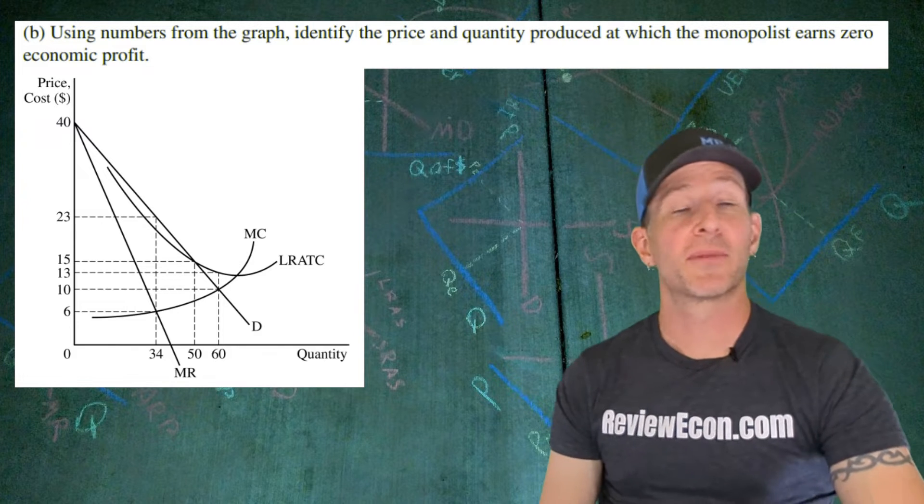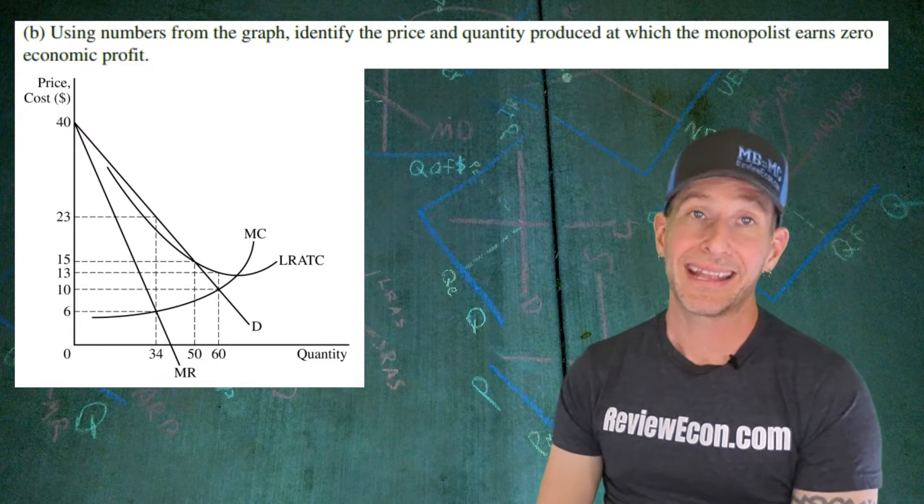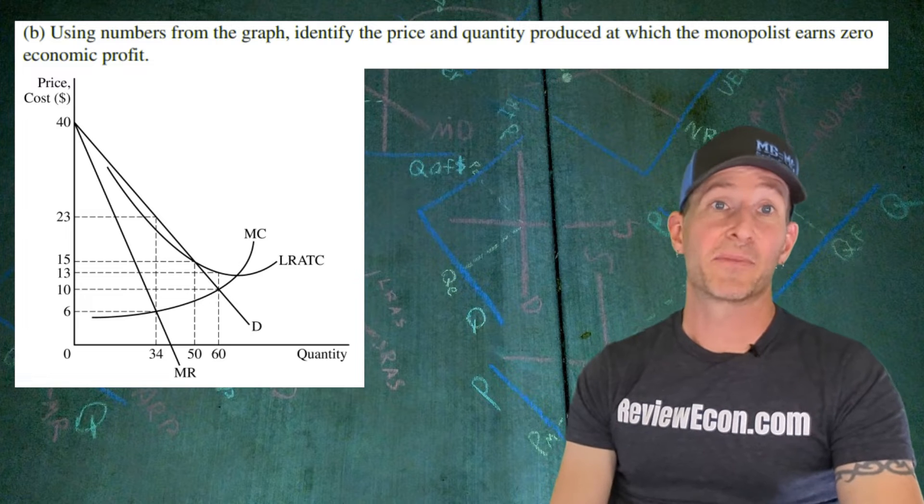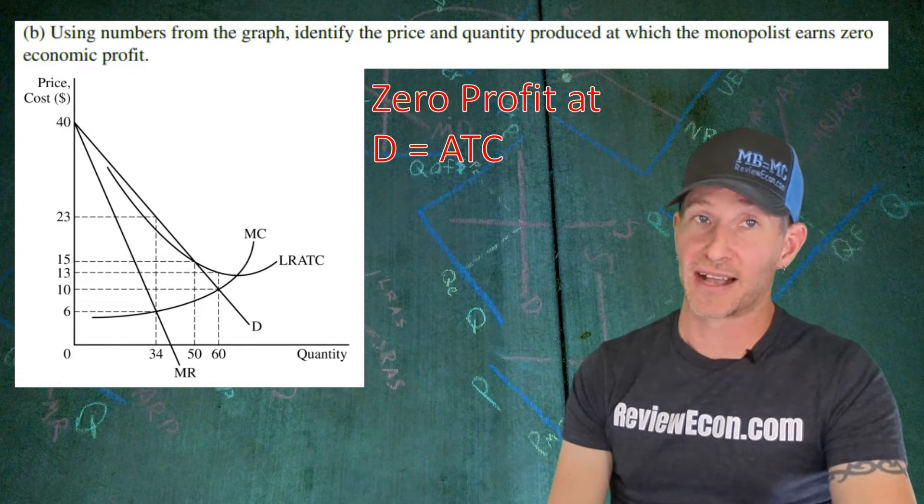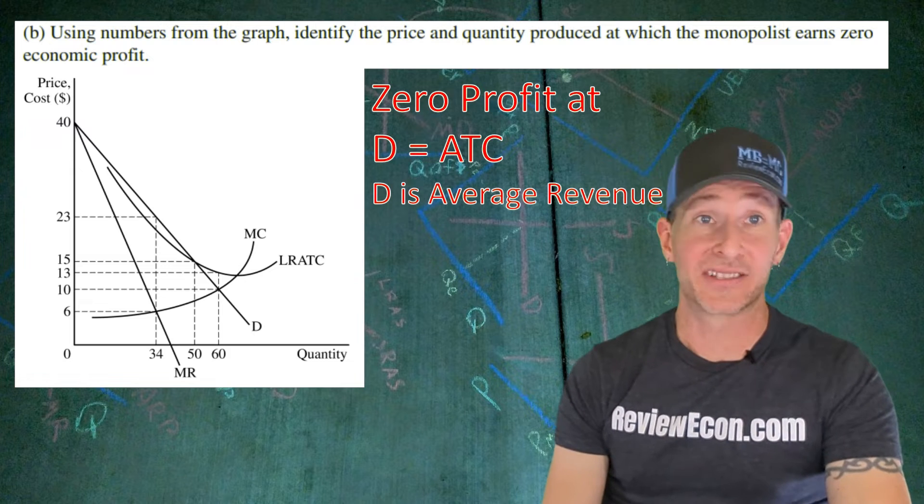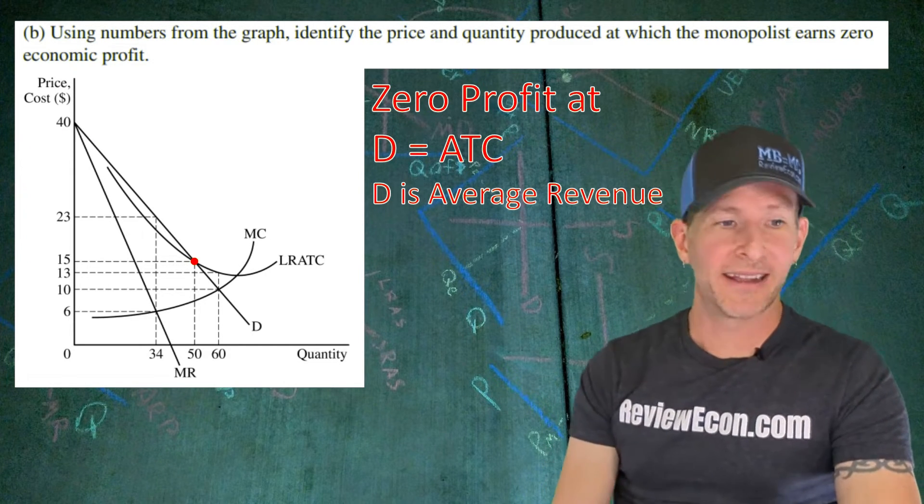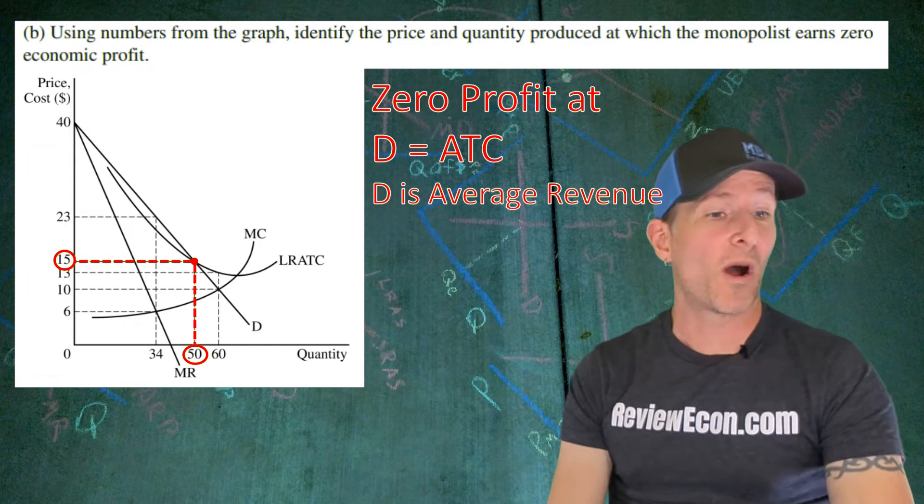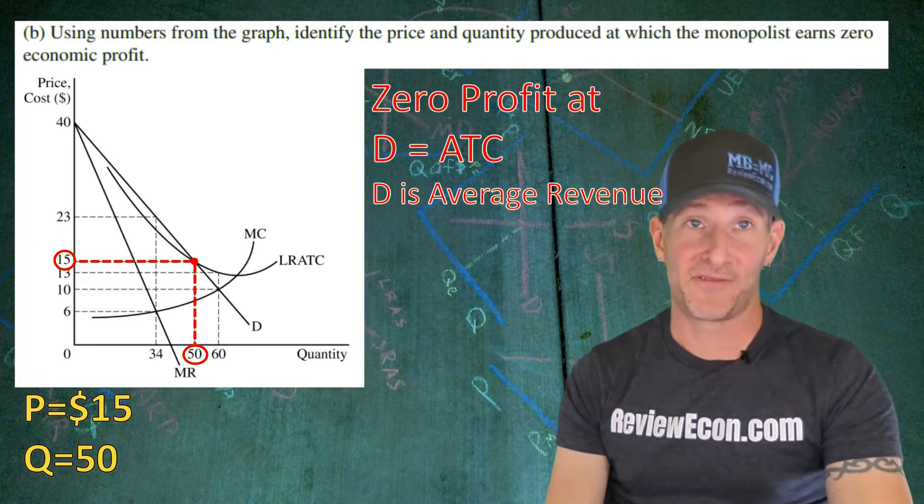For part B, we're going to use the numbers on the graph to identify the price and the quantity that will be produced if the monopolist is earning zero economic profit. The breakeven price and quantity is found where demand equals average total cost. And that's because demand is also the average revenue or price. So there's that point right there. That gives us a price of $15 and a quantity produced of 50. Just identify it, $15 and 50 to get your point.